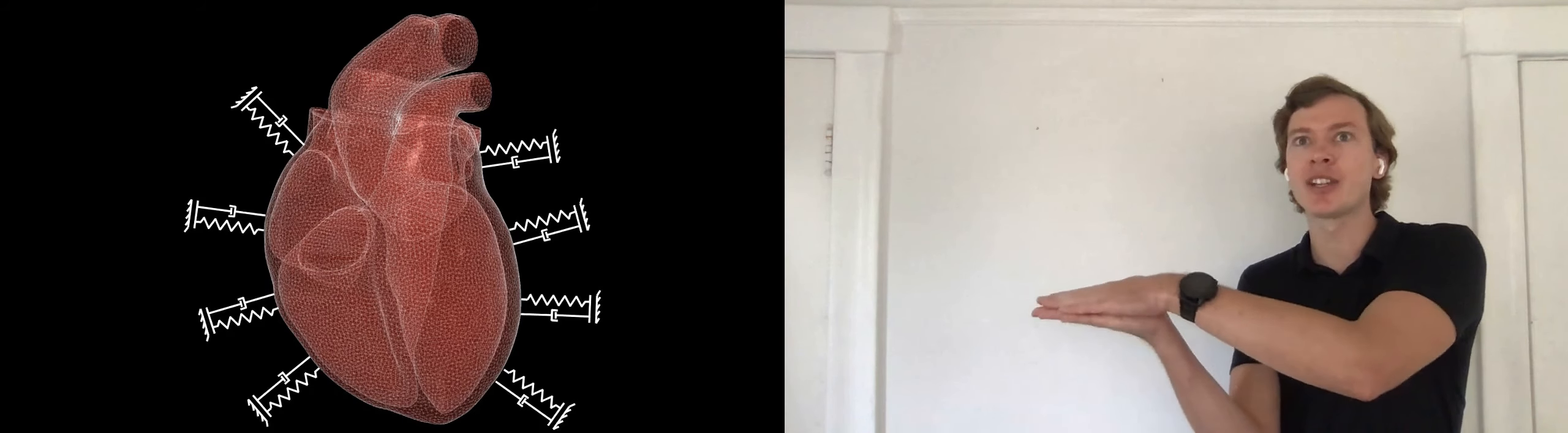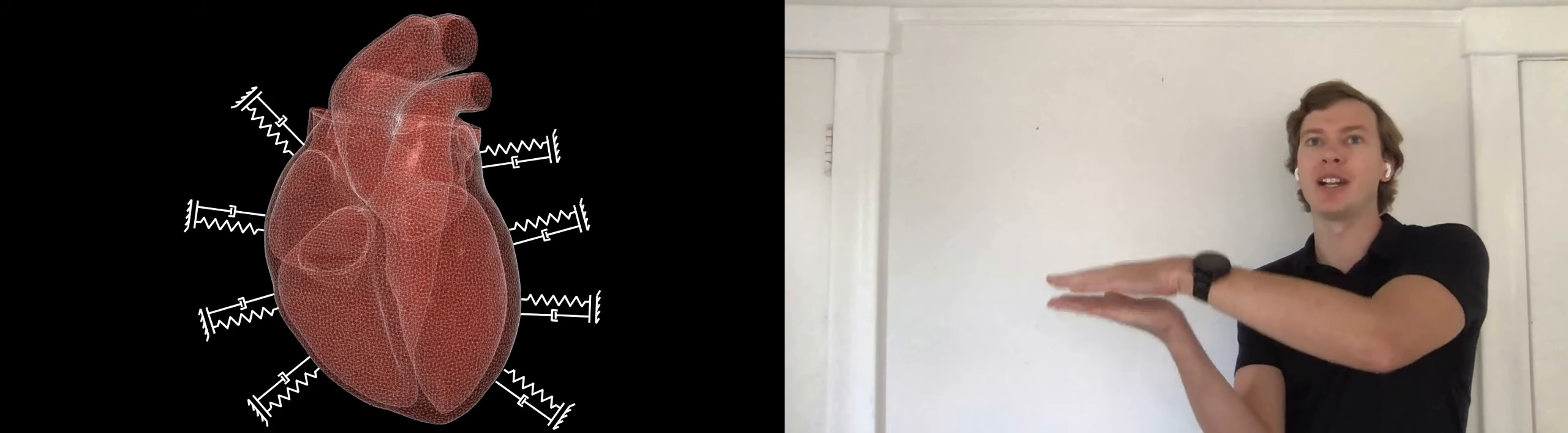At the same time, the pericardium makes sure the heart always stays in place. And exactly that is modeled by pericardial boundary conditions on the surface of the heart. They allow frictionless sliding in tangential direction, but they offer support in normal direction.